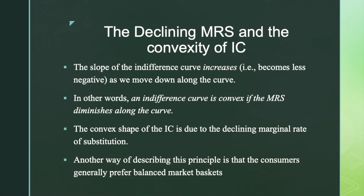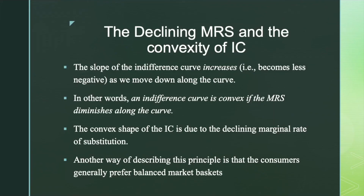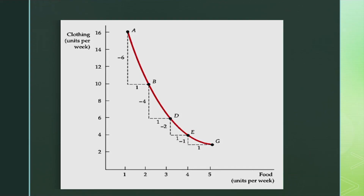I have already explained that the MRS or the slope falls as we move down the indifference curve. This decline in the MRS reflects an important characteristic of consumer preferences. As we saw, the slope of the indifference curve becomes less negative as we move down the curve. In other words, an indifference curve is convex if the marginal rate of substitution diminishes along the curve. The MRS of food for clothing at point B is 6. The MRS declines to 4 when moving from point B to point D, then to 2 from D to E, and to 1 starting at E and moving to G. This implies that as food consumption increases, the slope of the indifference curve falls in magnitude.